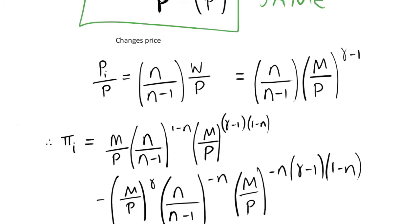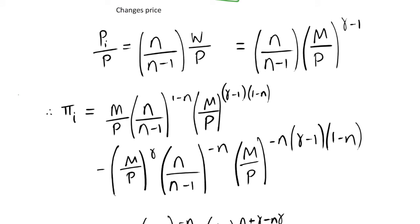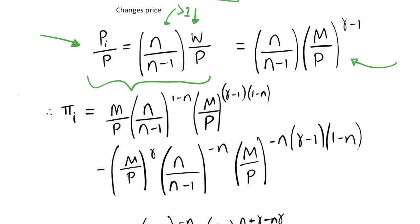We're interested in how this compares to profits if the firm did change its price. In the previous video we derived the optimal price level for the firm, which has a markup pricing structure because of monopoly power. The optimal price is set based on cost with a markup greater than 1, given by eta over eta minus 1. We can substitute in for w over p to express this in terms of m over p using the relationships already derived.